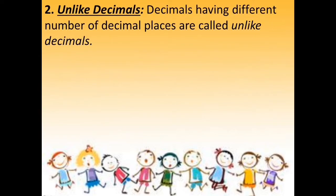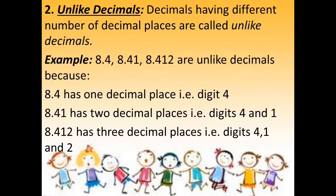Next is unlike decimals. Decimals having different numbers of decimal places are called unlike decimals. For example, 8.4, 8.41, and 8.412 are unlike decimals because 8.4 has one decimal place (digit 4), 8.41 has two decimal places (digits 4 and 1), and 8.412 has three decimal places (digits 4, 1, and 2). Hopefully it is also clear to you.